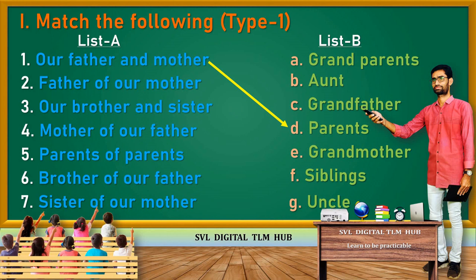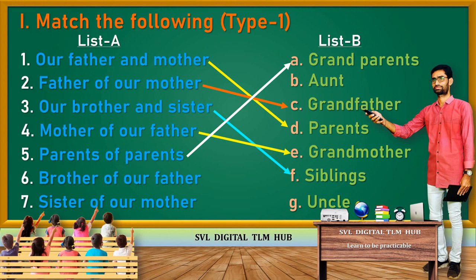Second one: Father of Our Mother — Grandfather. Third: Our Brother and Sister — Siblings. Fourth one: Mother of Our Father — Grandmother. Fifth one: Parents of Parents — Grandparents. Sixth one: Brother of Our Father — Uncle. Seventh one: Sister of Our Mother — Aunt.